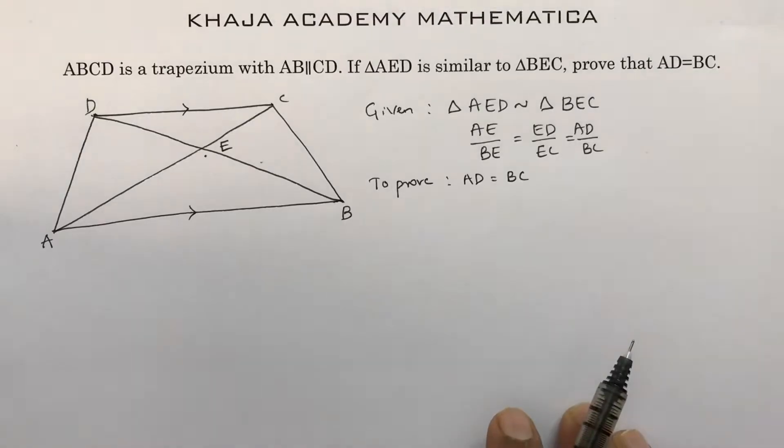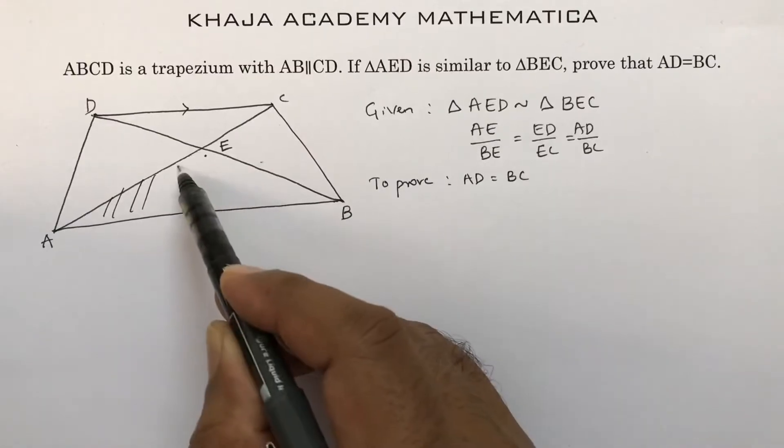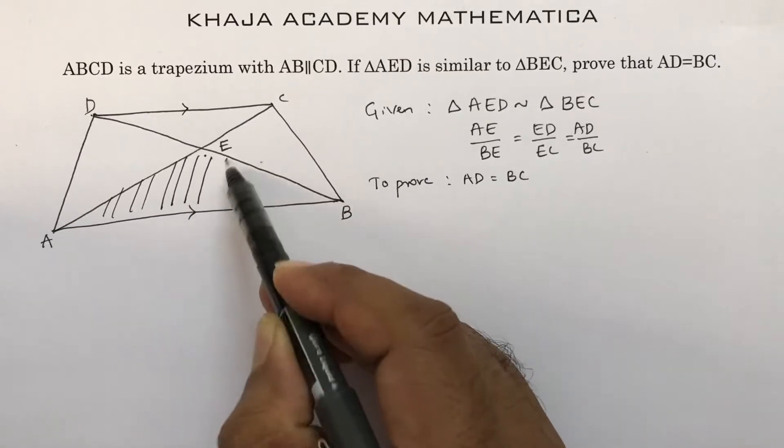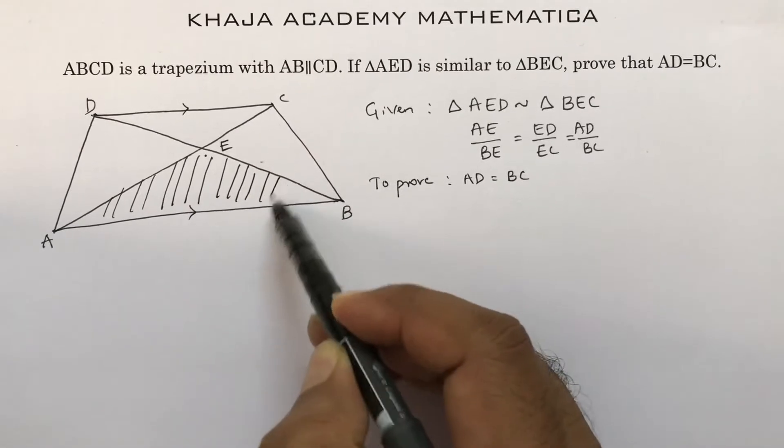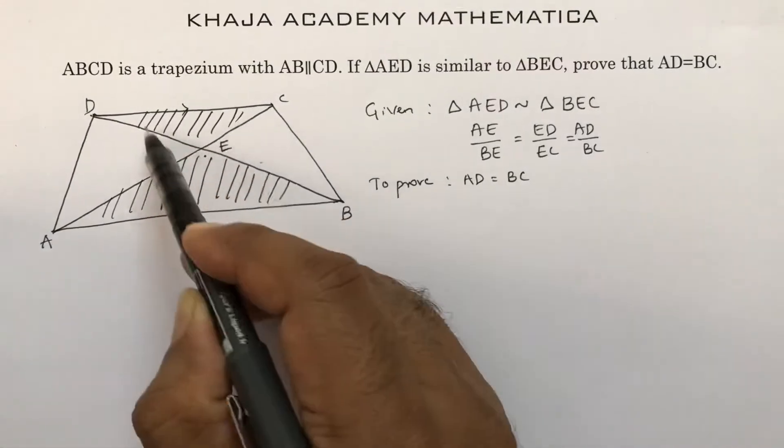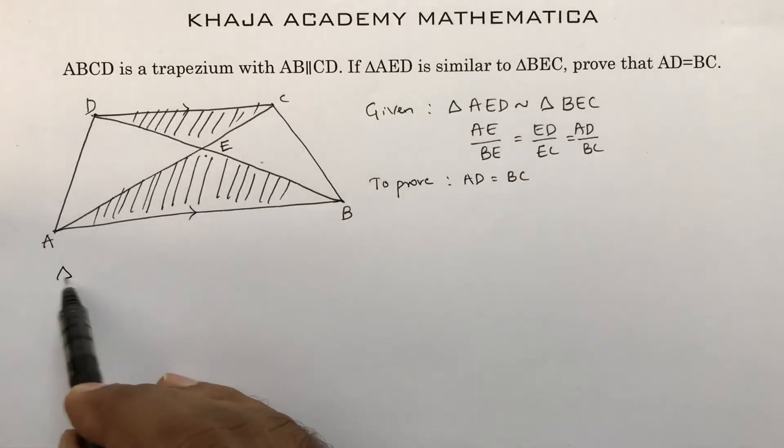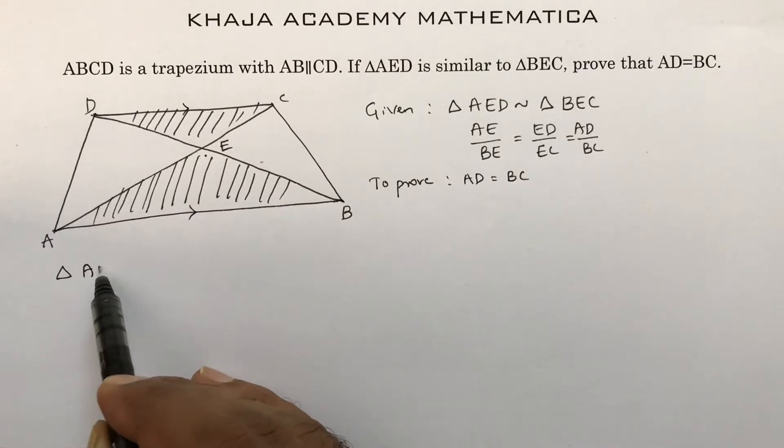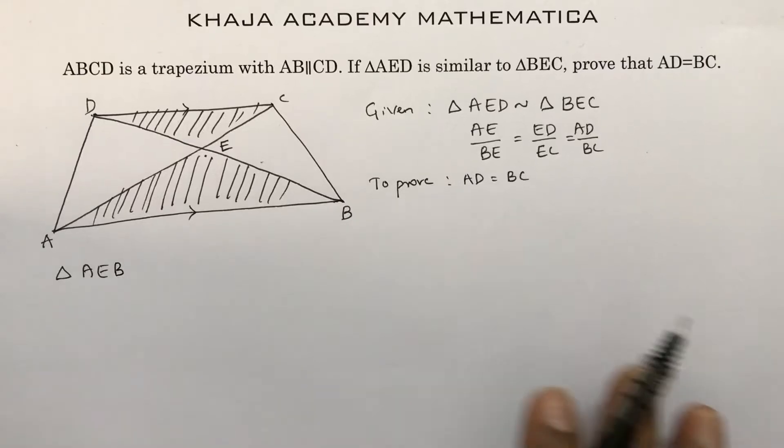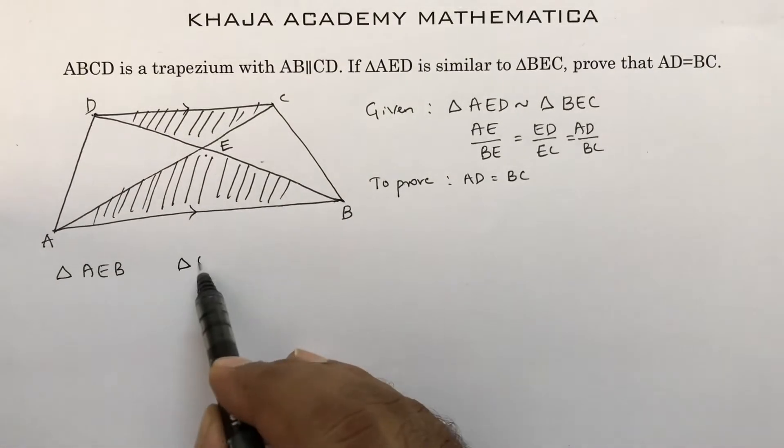To prove that, see, take these two triangles, the ones which I am shading. This triangle and this triangle, and try to prove similar. So triangle AEB and triangle CED.